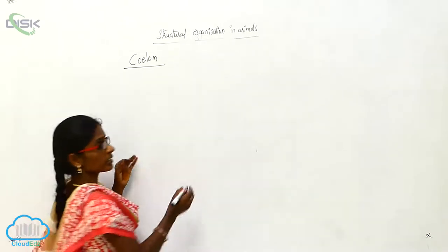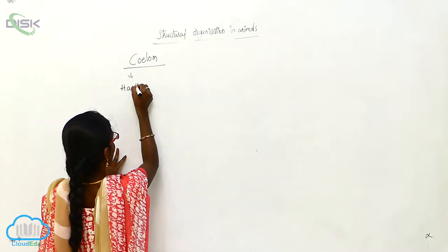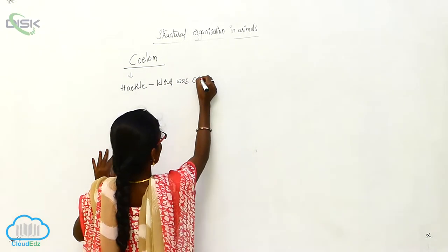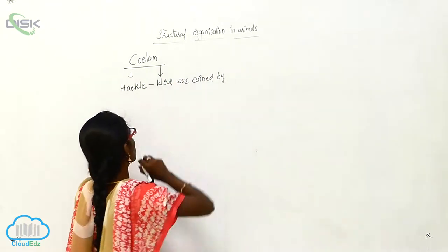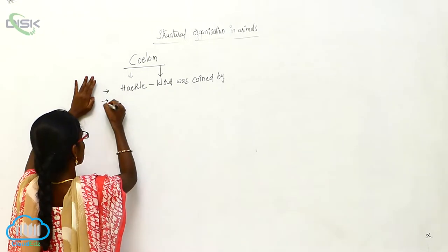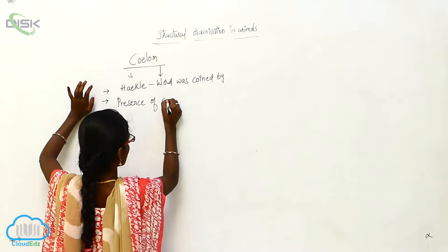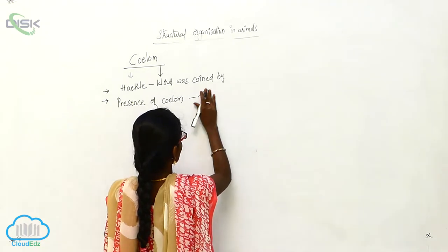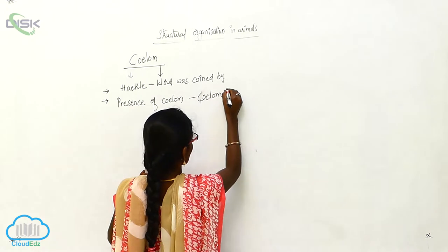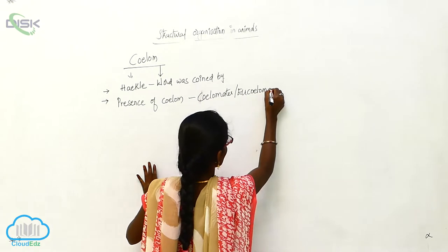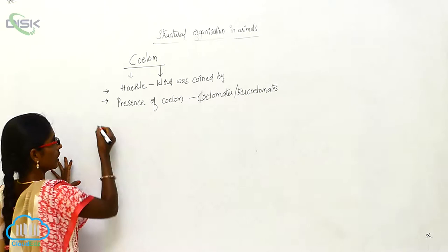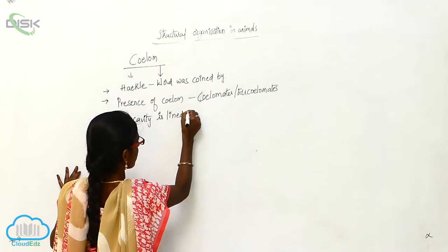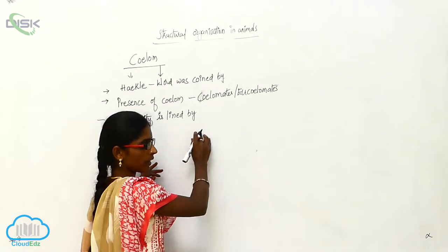The coelom word was coined by Haeckel. The presence of coelom in animals is called coelomates, or eucoelomates. In eucoelomates, the body cavity is lined by mesoderm.